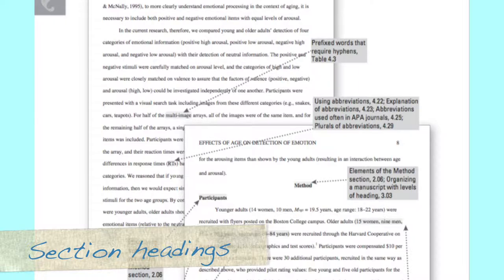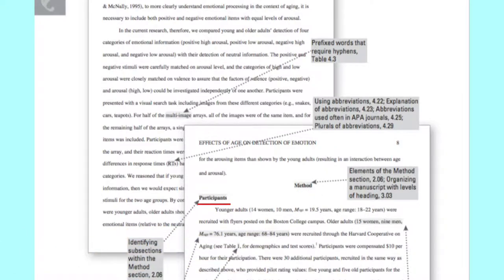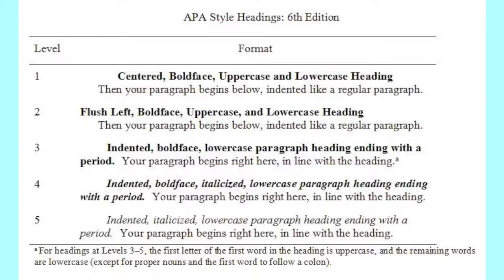As you flip through the pages of the sample paper, you'll notice that they use section headings and sometimes subheadings in certain instances. For papers that require you to use headings, you'll typically use about two levels. So you're going to be centering the first level that it'll be bold with uppercase and lowercase. Second level heading will be flush left, boldface, uppercase, and lowercase heading, and so on, just depending on how many levels that you need for your assignment.